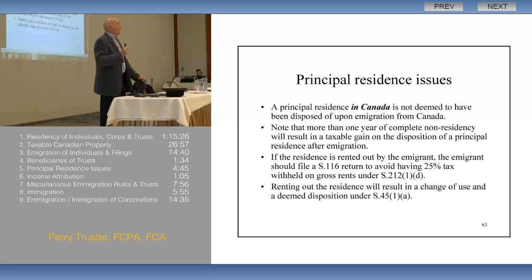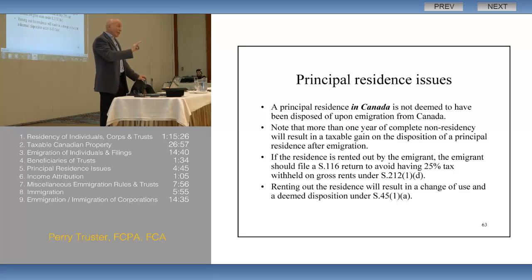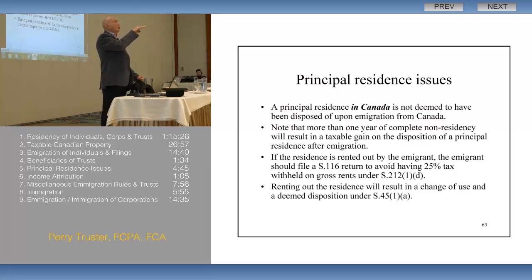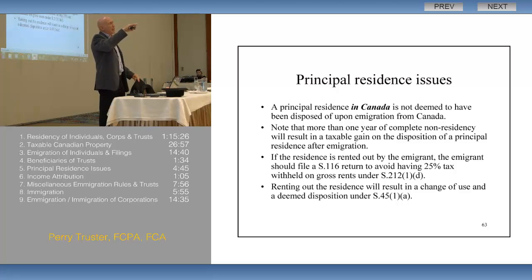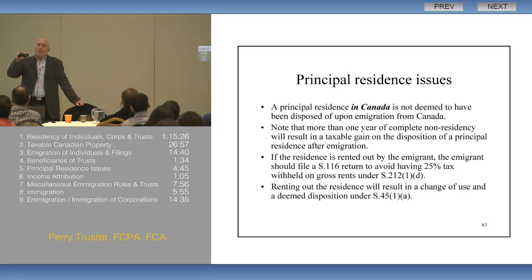Most of us don't file the T-2091 — there's a form. The government says don't bother filing it if it was always a principal residence. The formula has a numerator: one plus the number of years that the home is designated as a principal residence. The denominator is the number of years of ownership. As a non-resident, you cannot designate years as a principal residence.